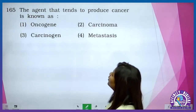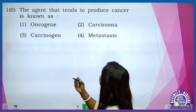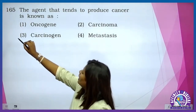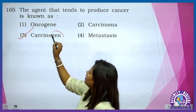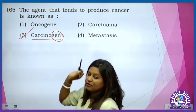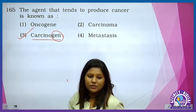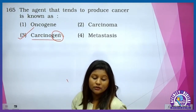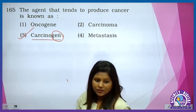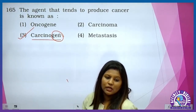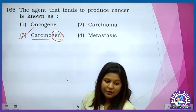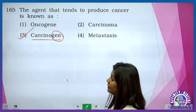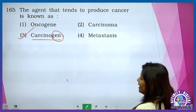The agent that tends to produce cancer — that is carcinogen. Carcinogens are the agents: physical carcinogen hai, then chemical hai, biological hai. These are all the agents.